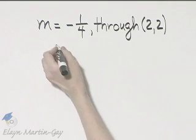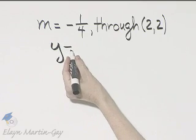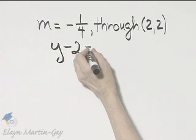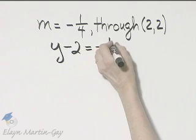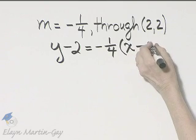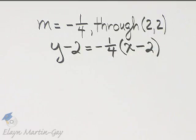And that is y minus the y value of the given point, in our case 2, is equal to slope negative 1 fourth times x minus the x value of the given point. And there we have it.